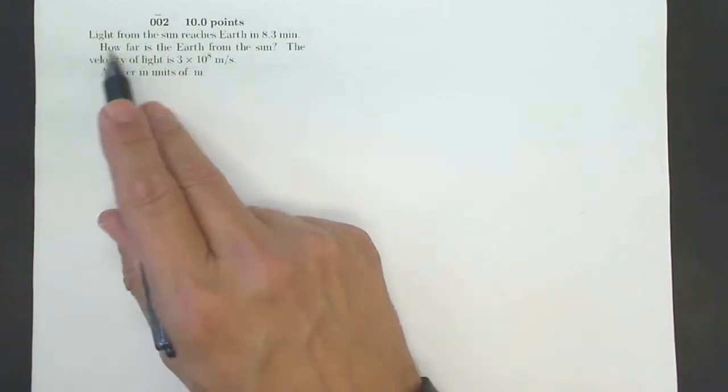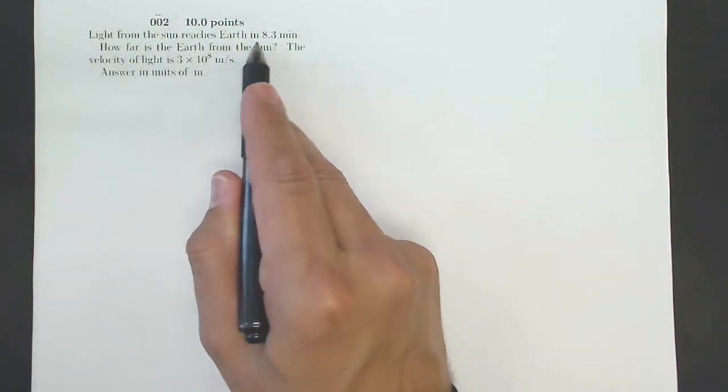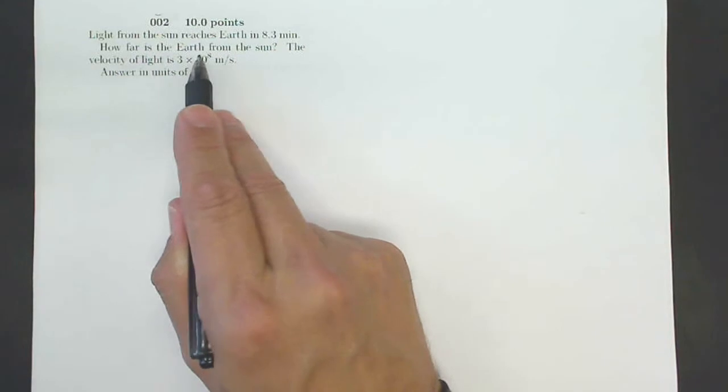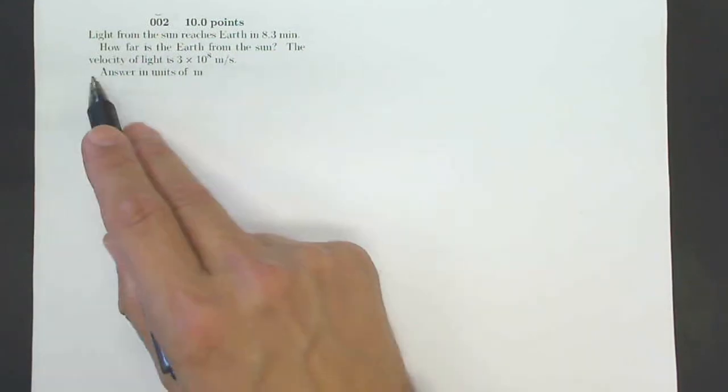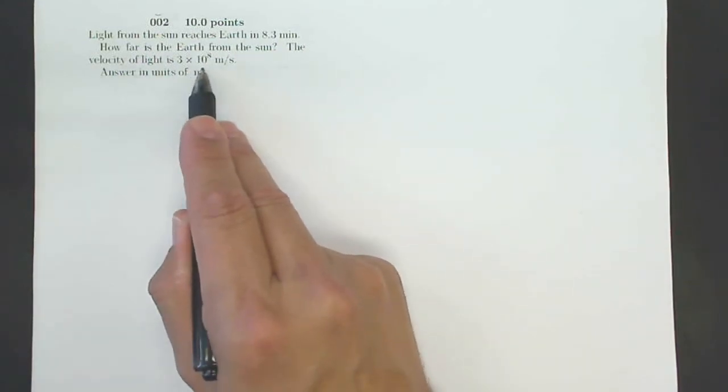Welcome to Mr. Beck Does Your Homework. This is homework number 2.1, question number 2. It says, light from the sun reaches earth in 8.3 minutes. How far is the earth from the sun? The velocity of light is 3 times 10 to the 8th meters per second.